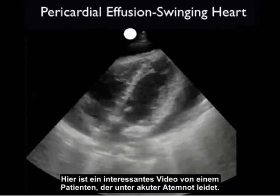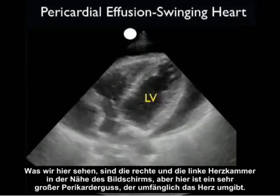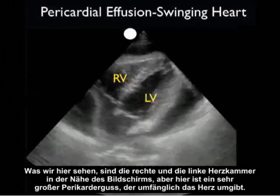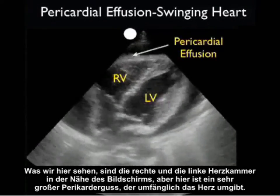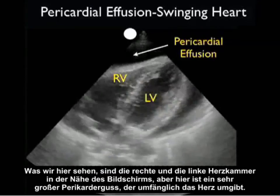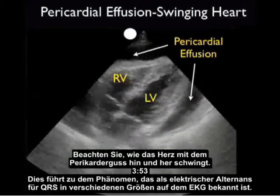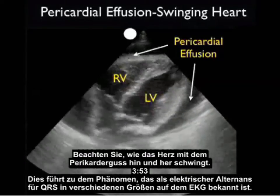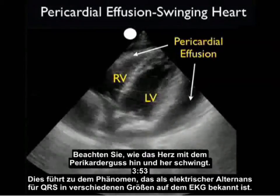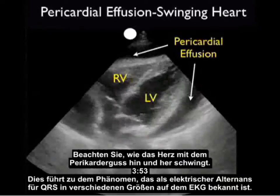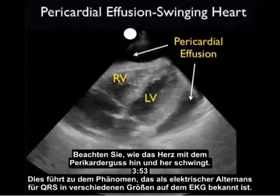Here's an interesting video clip of a patient who presented with acute shortness of breath. What we notice here is the right ventricle and the left ventricle closest to the screen, but we see a very large pericardial effusion circumferentially surrounding the heart. Notice the heart swinging back and forth in all the pericardial effusion. This gives rise to the phenomenon known as electrical alternans — different sized QRS complexes on the EKG.